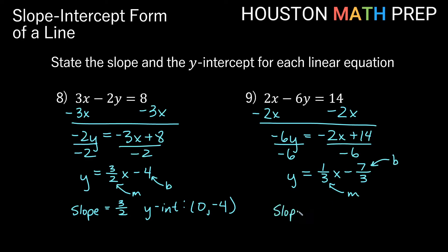So our slope is positive 1 third, and our y-intercept — if b is negative 7 thirds — is the point (0, -7/3).